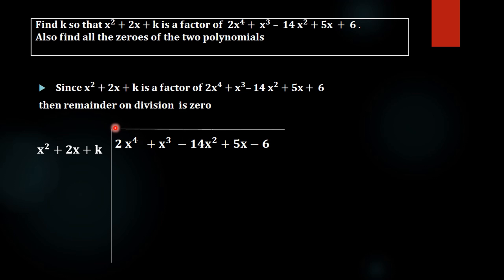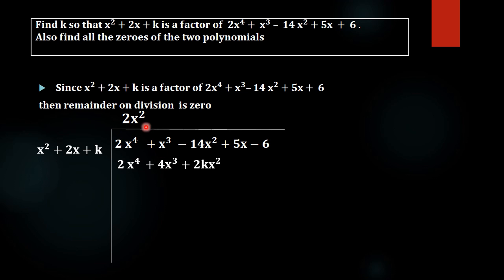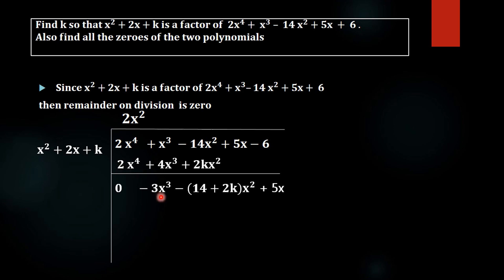To perform long division, we need the coefficient of x⁴ to become 0. So x² into 2x² gives 2x⁴, giving us 0. We take 2x² as the first term of the quotient. Then 2x² into x² gives 2x⁴, 2x² into 2x gives 4x³, and 2x² into k gives 2kx². In the next step we subtract each term.